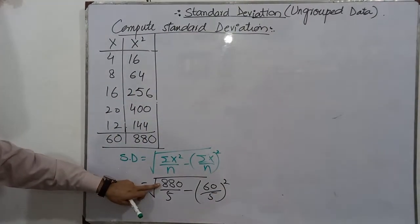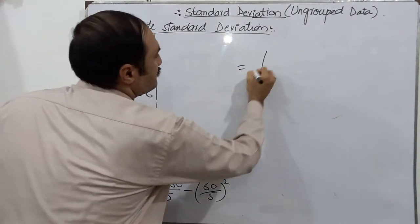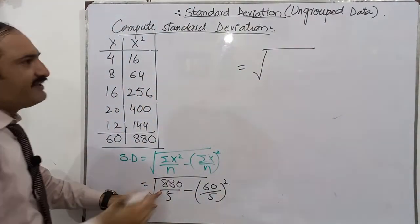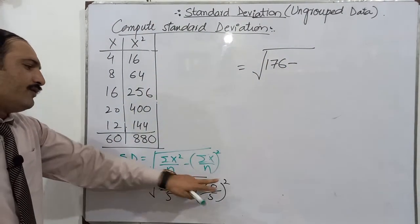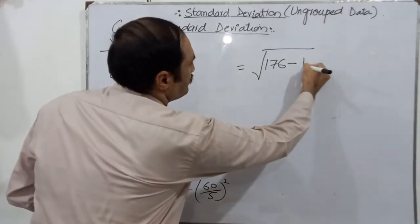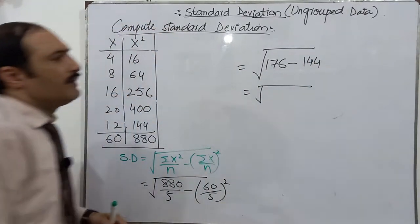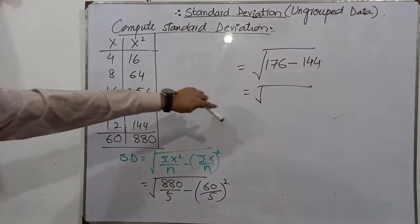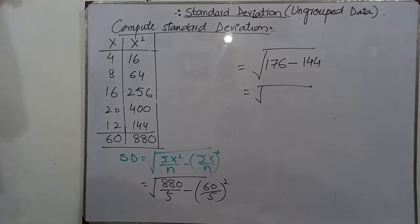So here is 880 divided by 5 is equal to 176 minus 12, 12 square 144.